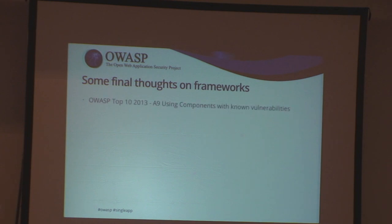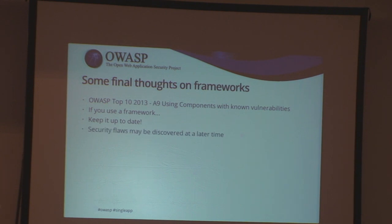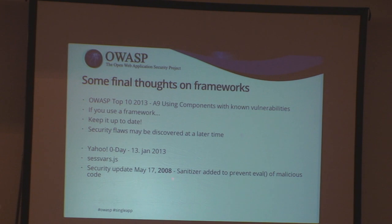Some final thoughts: in the OWASP Top 10 2013, there's A9 — using components with known vulnerabilities — and this applies to these kinds of applications as well. If you use a JavaScript framework, keep it up to date. Security flaws are discovered all the time and might be discovered later, as happened to Yahoo. On January 13th, 2013, they were using a library called sesvars.js. It had a security update back in 2008 because there was some eval mess inside there, and they hadn't updated it — so they basically had remote code execution.